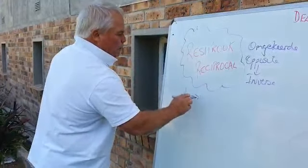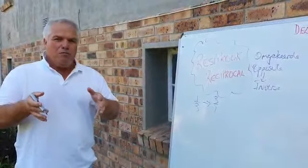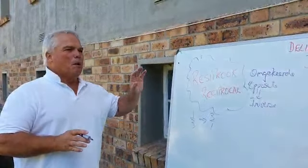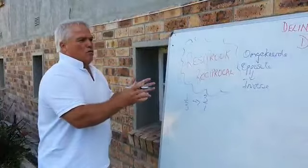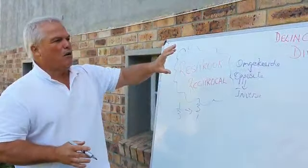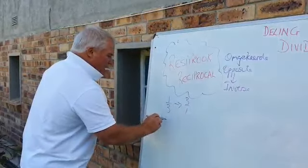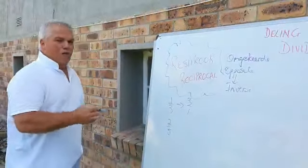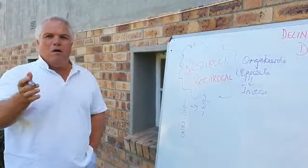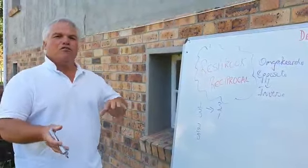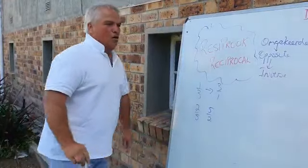What will be the reciprocal? Very simply, I flip it and write it as 3 over 1. As simple as that. Take careful note that with fractions, it is not the dividend that gets reciprocated, but only the divisor. So in short, the reciprocal is the inverse. One more example: I have 2 over 5 - what will its reciprocal be? You simply flip the fraction - you make the numerator the denominator and the denominator the numerator. So it would be 5 over 2.